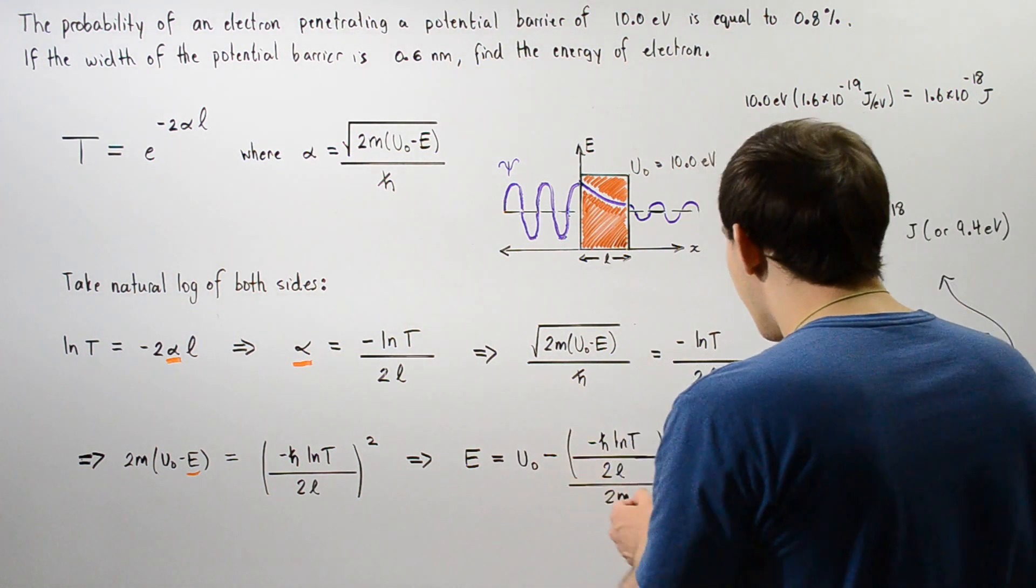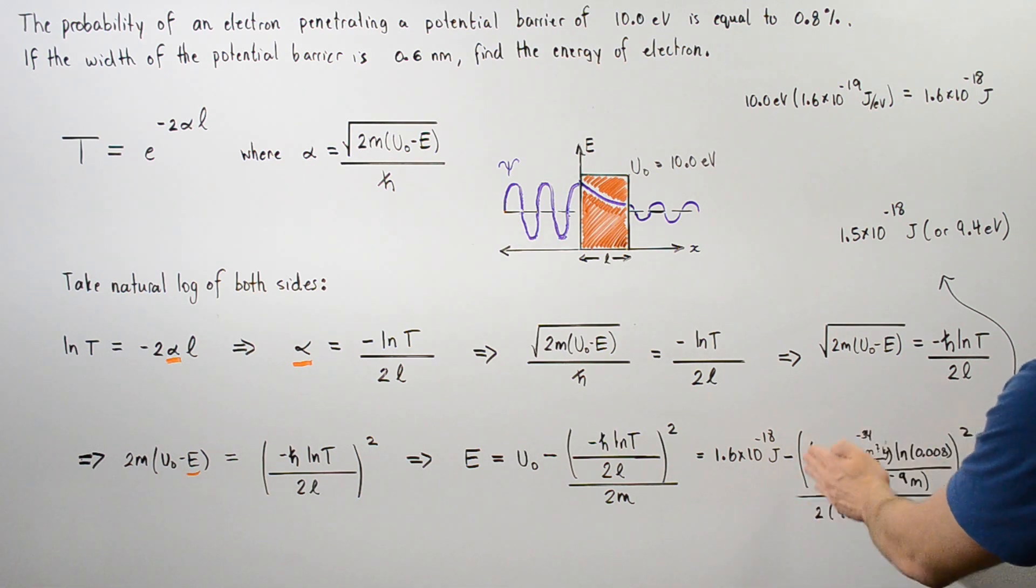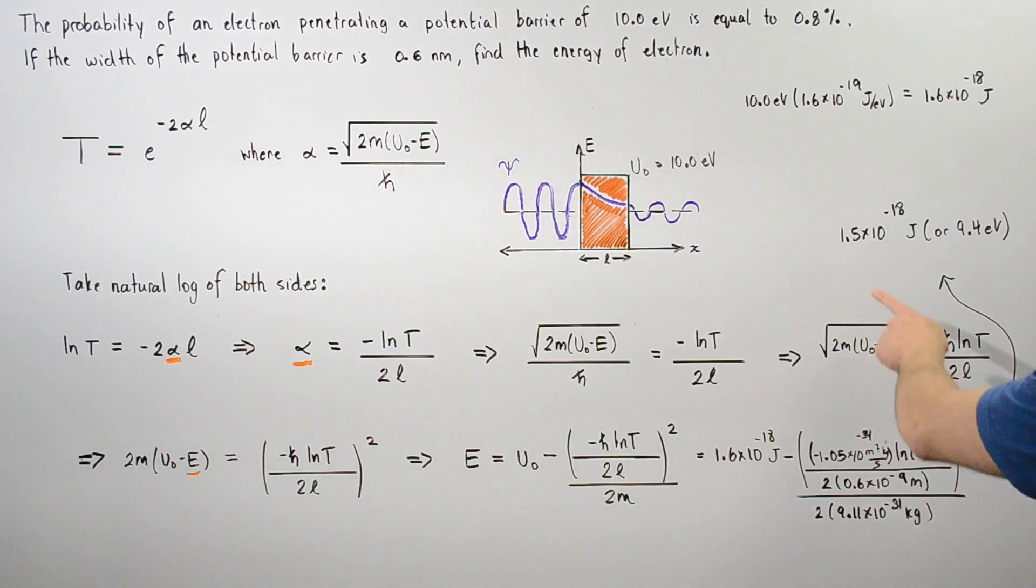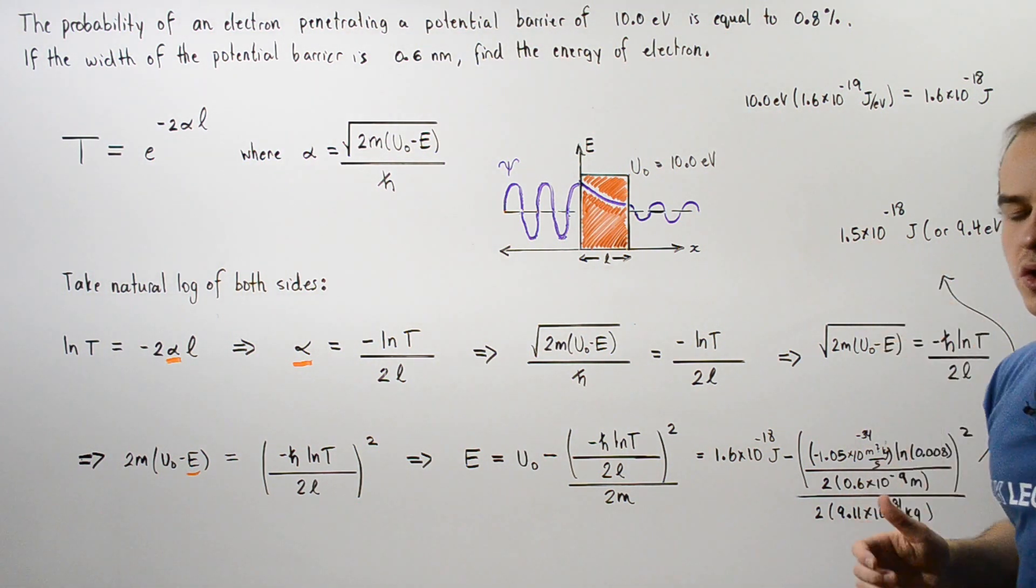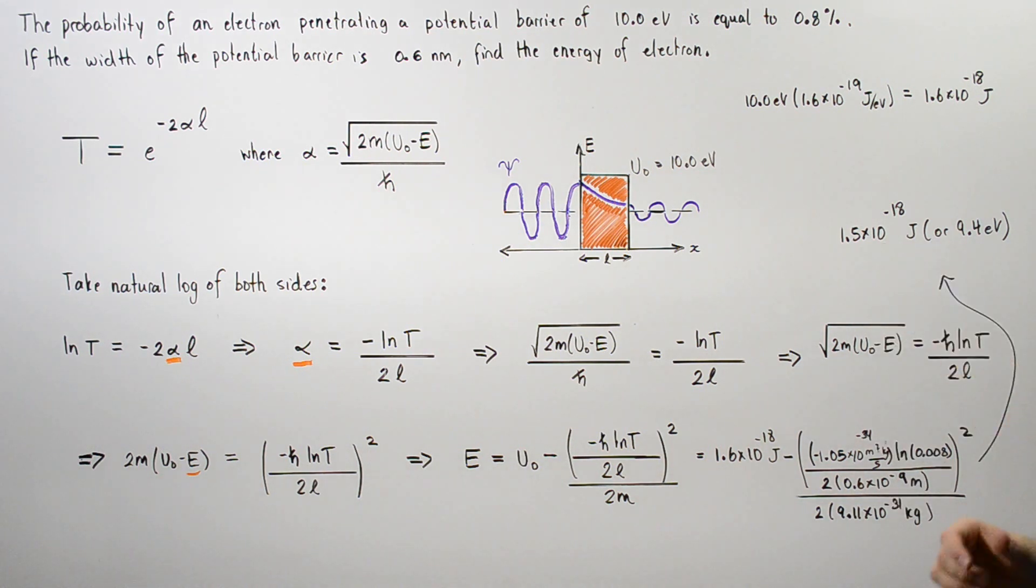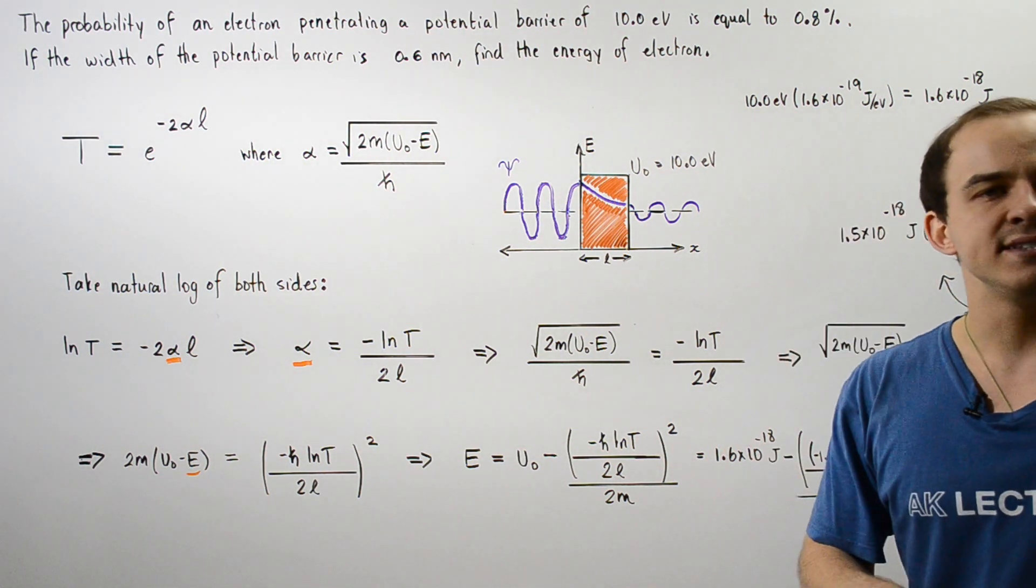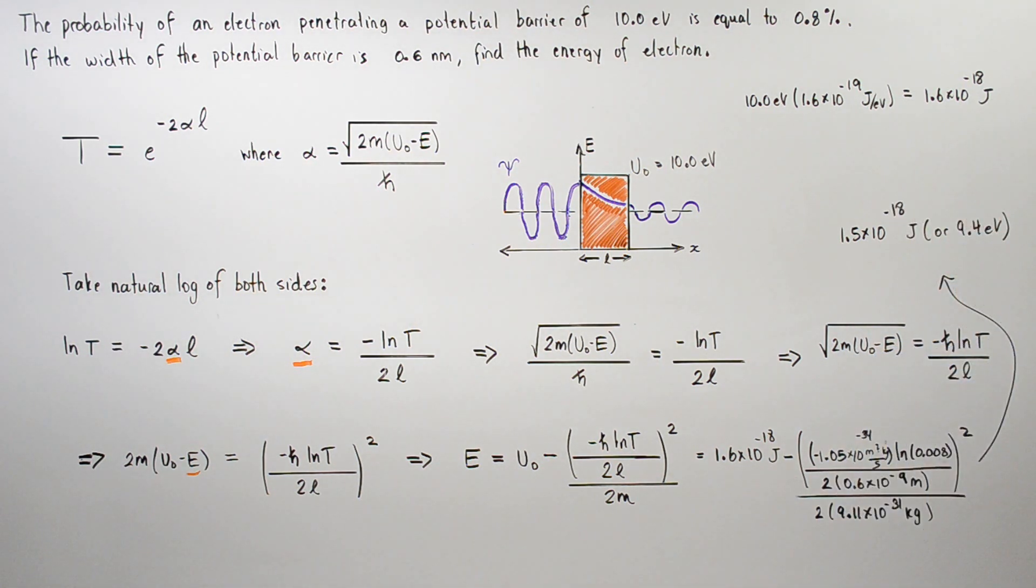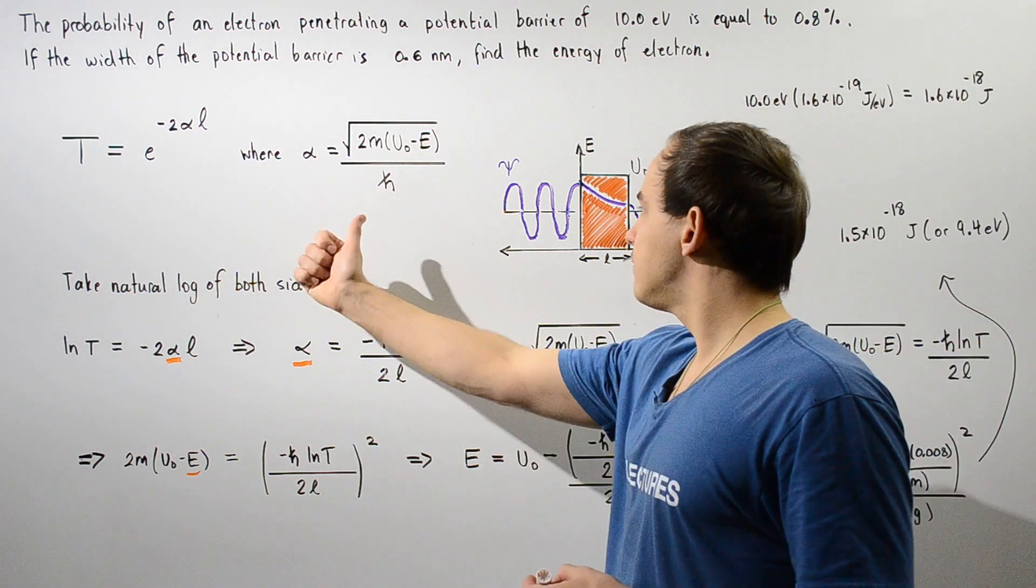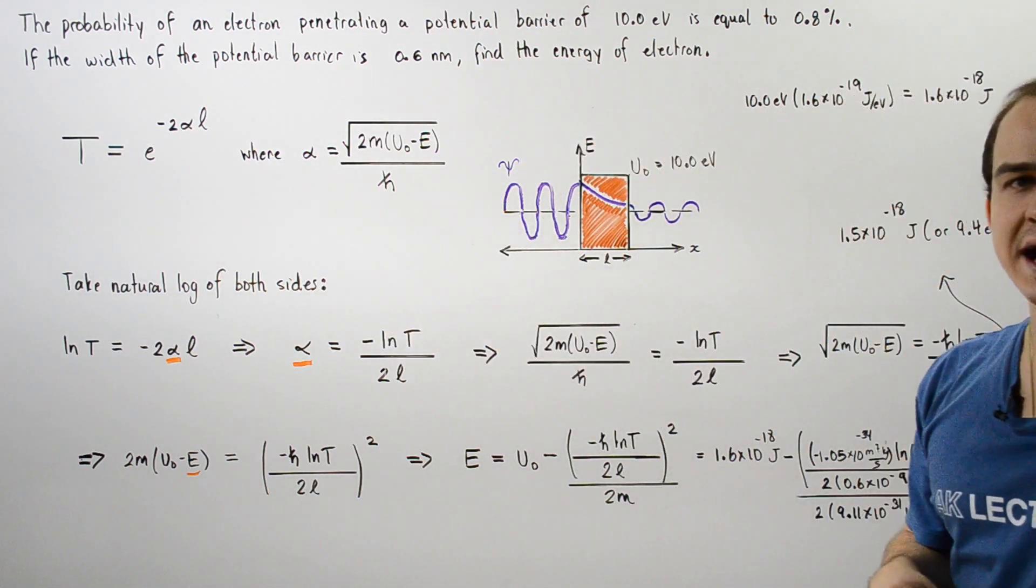Now we take the U0 and we subtract this quantity from U0 and we get about 1.5 times 10 to negative 18 joules. If we want to, we can also convert this quantity into electron volts by dividing it by 1.6 times 10 to negative 19 joules and we get about 9.4 electron volts is the energy of the electron as it travels along this horizontal axis.